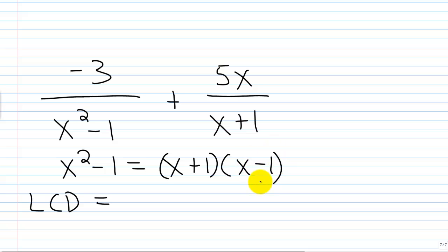So once you see that, well basically you have a common factor of x plus 1. So I can put that in the LCD, and then this x minus 1 has got to go in there. And so the LCD would be x plus 1 times x minus 1, or just x squared minus 1.